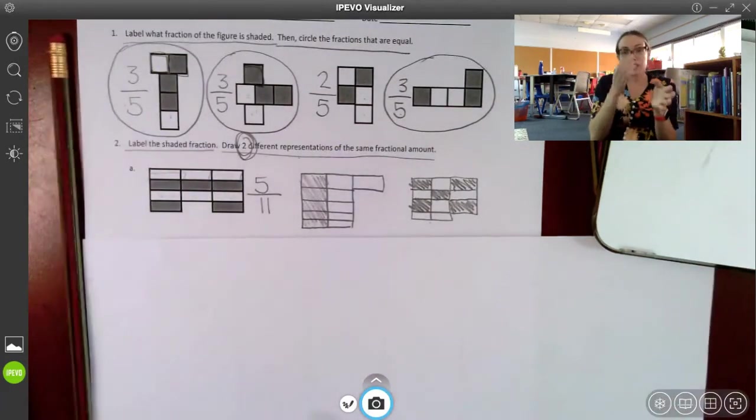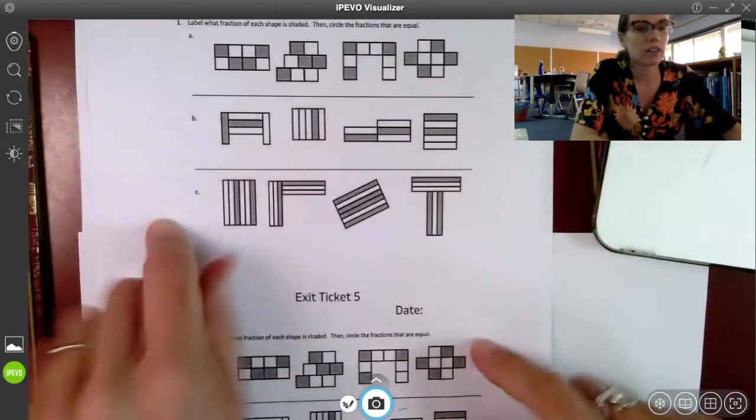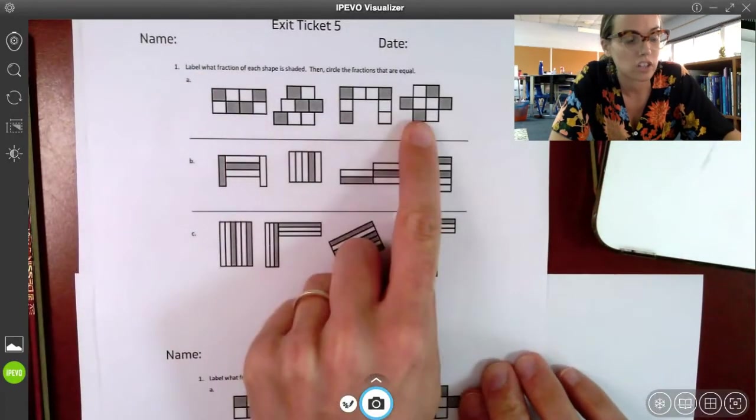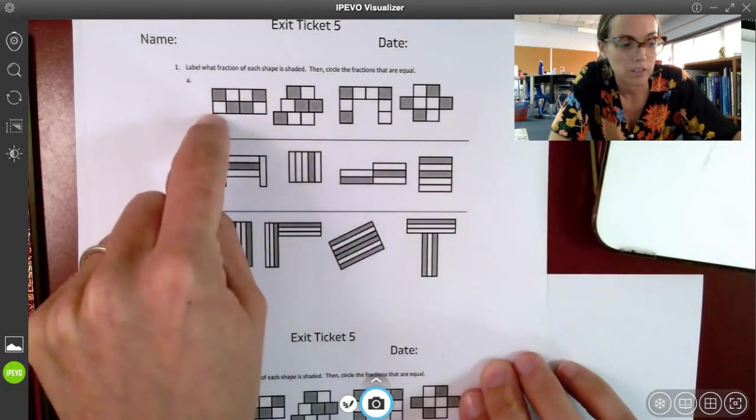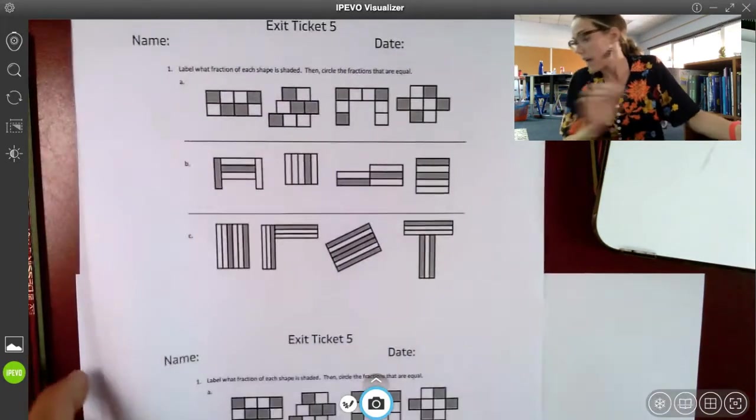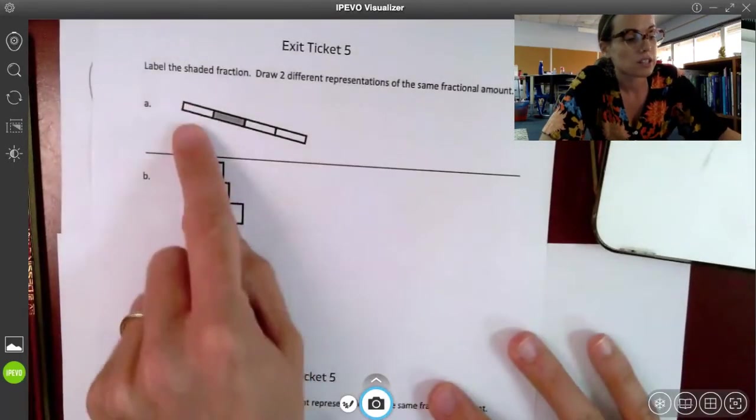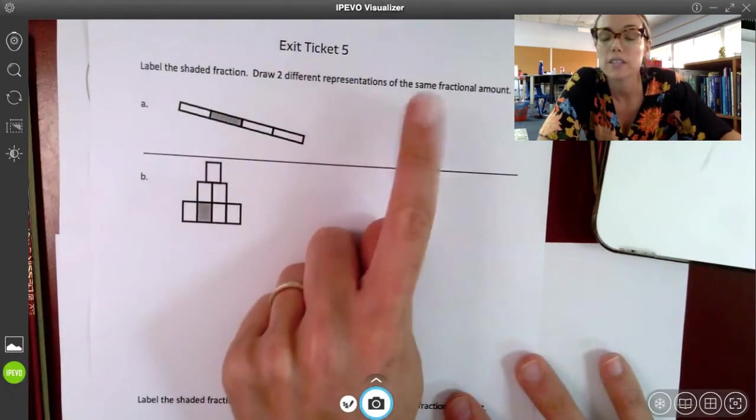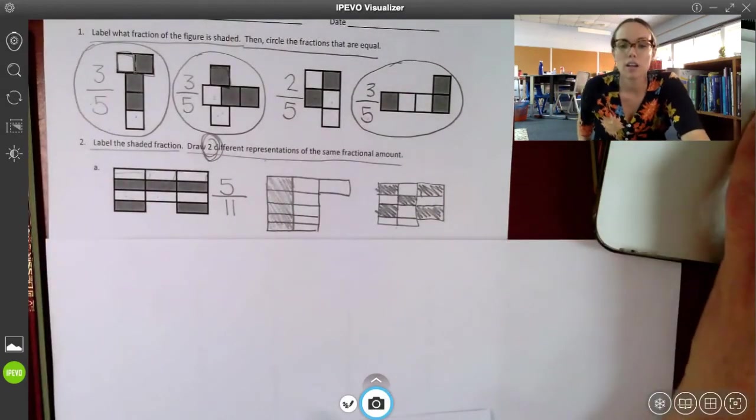Now this is very similar to the work you're going to do on your exit ticket. You have the same label, these fractional shapes, and then circle the ones that are equal, right? So, counting up the parts that are shaded and the parts total. And then on the back, you will do the same thing that I just did, which is label this one shaded fraction and draw two different representations of the same fractional amount. Have so much fun. Good luck, and I'll see you soon.